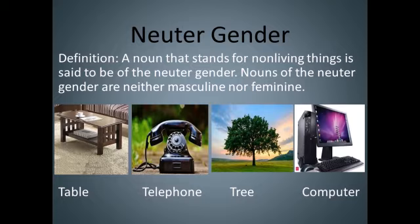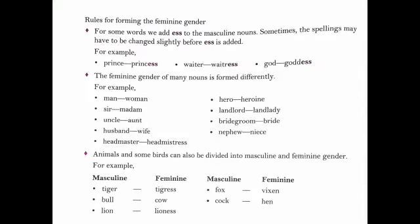A second way of forming the feminine gender is by adding a syllable, -ess. For some words, we add -ess to the masculine nouns. Sometimes the spellings may have to be changed slightly before -ess is added. For example: prince becomes princess, waiter becomes waitress, god becomes goddess. We can see that at the end of each word we are adding -ess and the words are changed from masculine to feminine nouns.